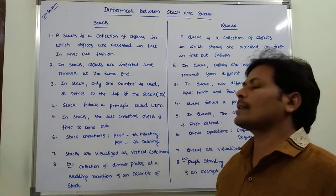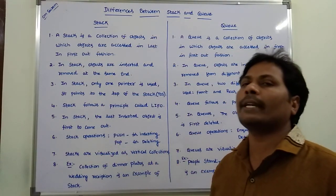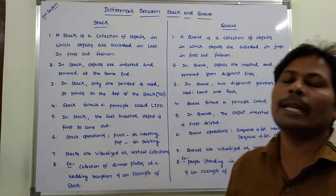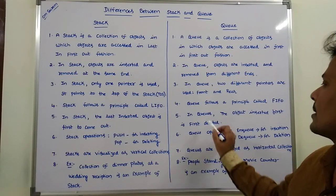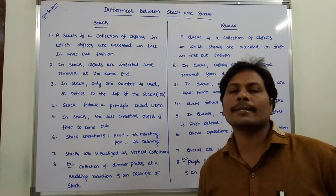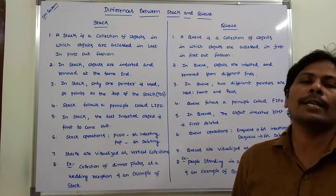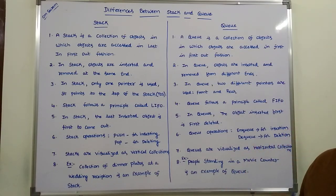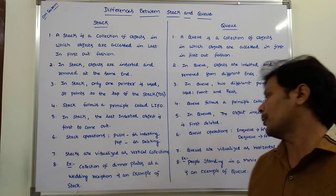Stack operations: push is used for inserting an element into the stack, and pop is used for deleting an element from the stack. In queue, there are two operations: NQ and DQ. NQ is used for inserting an element into the queue, and DQ is used for deleting an element from the queue.